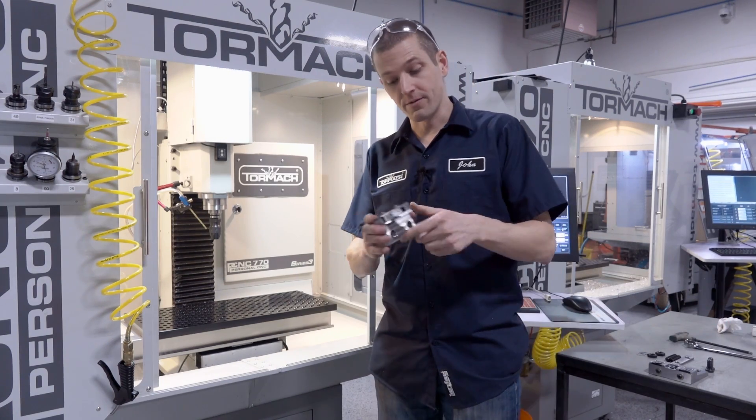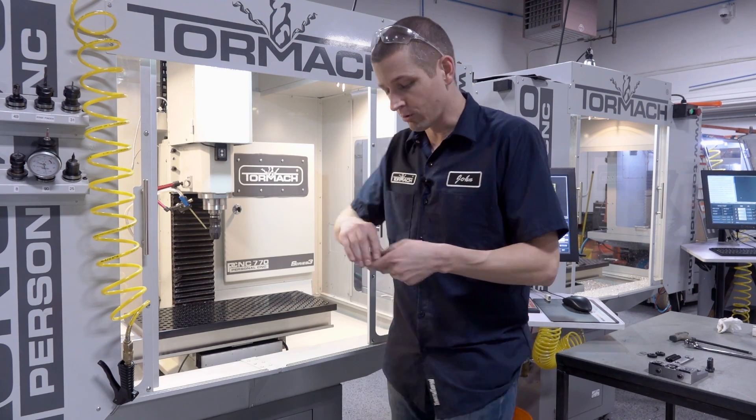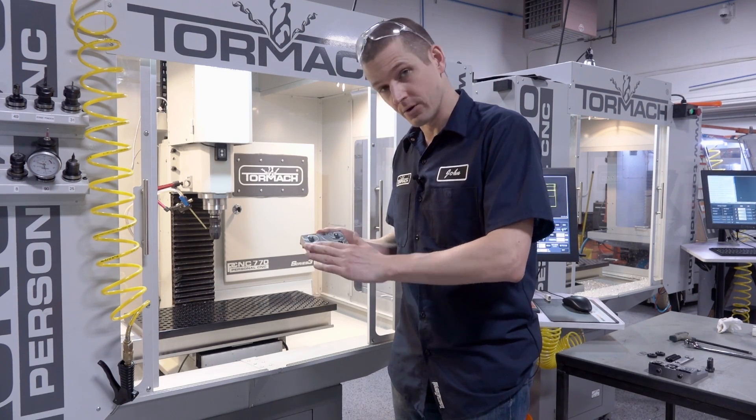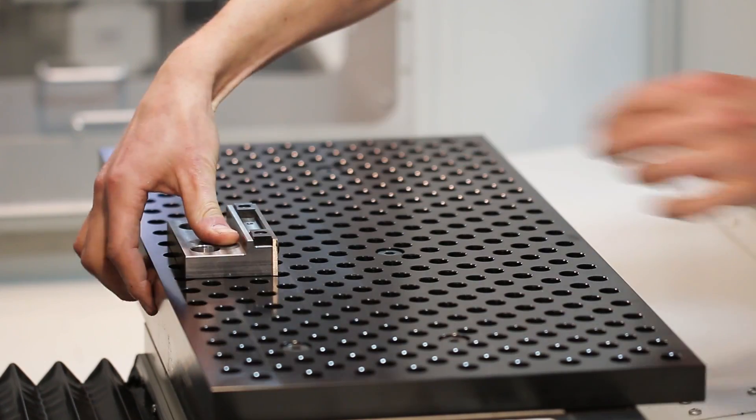Today we're going to start off pulling that bar out and using two of the Mighty Byte Talon grips to hold onto low profile. I'll make sure the bottom surface is free of chips and we'll set it on our fixture plate like so.